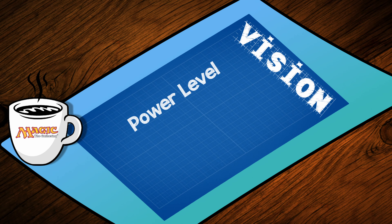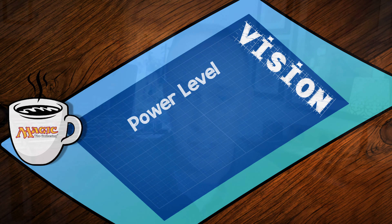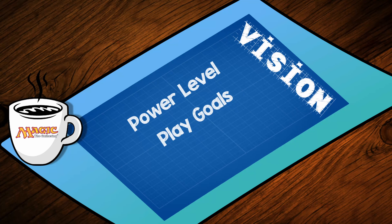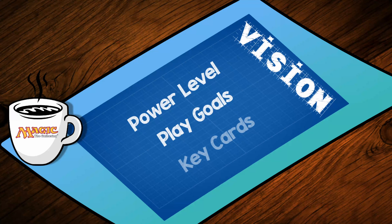For example, in vision design for cube, you're going to be determining your overall power level that you want to support — Legacy, Powered, some sort of power level band you're looking to curate — as well as what the overall play goals are. Maybe you're building a Two-Headed Giant cube, like I talked about with Anthony over on the Uber Cube Podcast. You're going to make different design decisions building a Two-Headed Giant cube versus a 1v1 Legacy power cube.